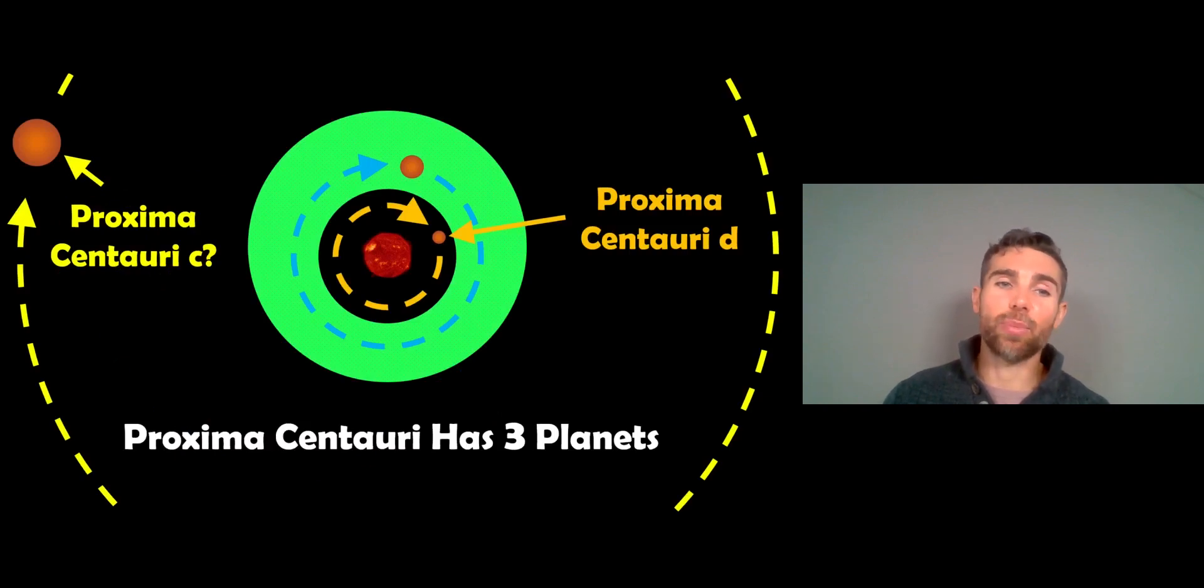So this isn't the only planet in the system as well. So I've only mentioned really Proxima Centauri b, which is in the green zone, which is the habitable part. But there are two other planets there. Well, I say two, potentially.